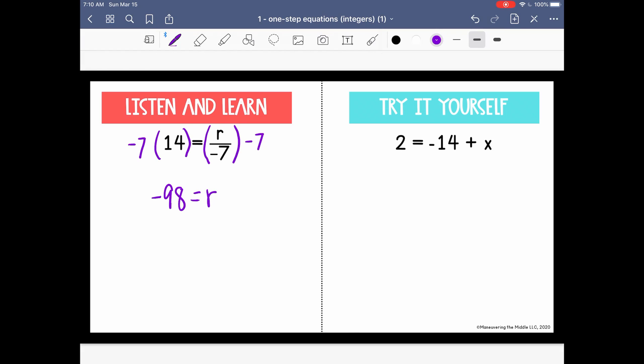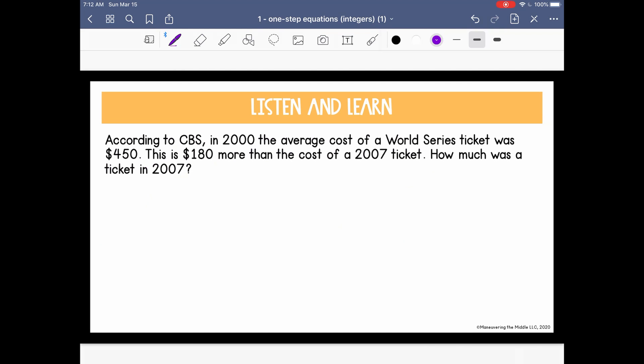Go ahead and pause the video and do the next one on your own. So we have 2 = -14 + x. I want to isolate x by itself, so I'm going to have to move the -14. I'm going to do the opposite of -14, which is to add 14 to both sides. And I'll have that 16 is equal to x. And you don't have to do this, but I like to rewrite these where the x is on the left. This will become more helpful when we get to inequalities.